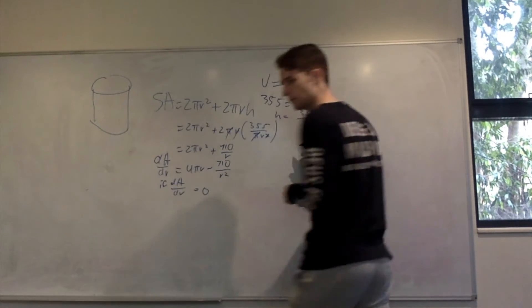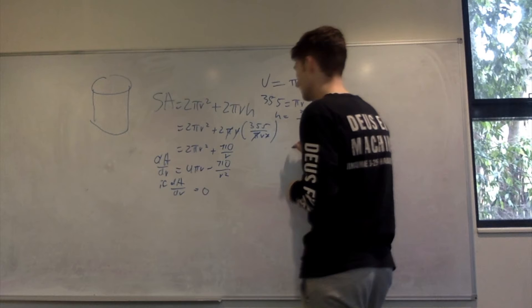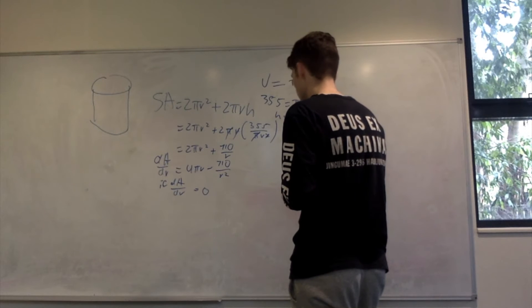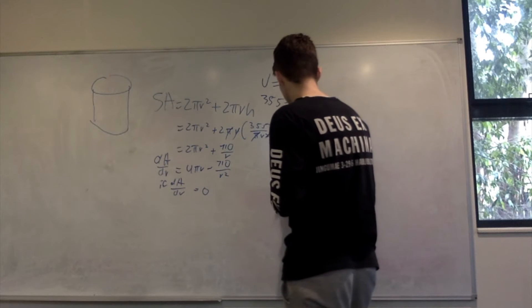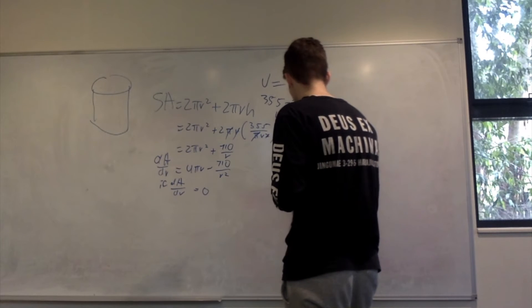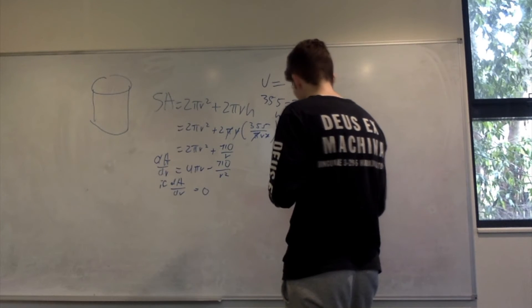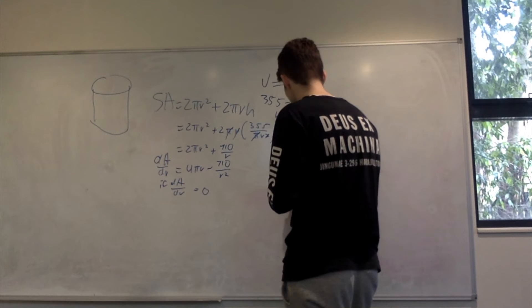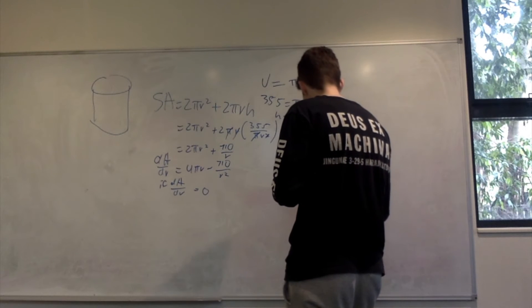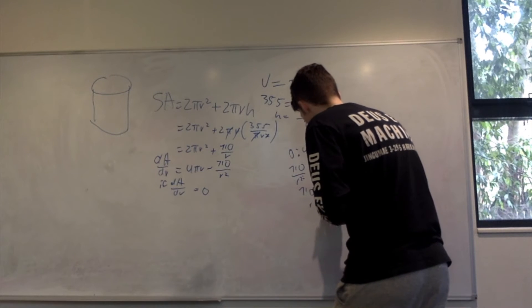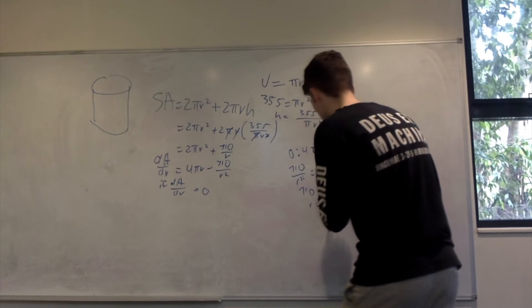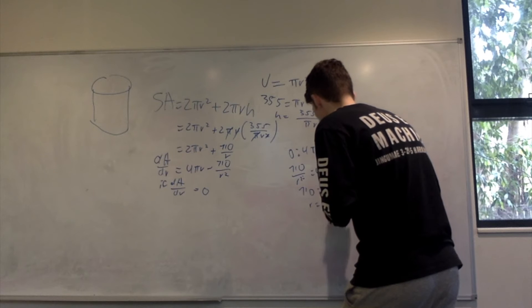If dS/dr = 0, then 0 = 4πr - 710/r². Solve for r. 710/r² = 4πr. Multiply r² across: 710 = 4πr³. r = ∛(710/4π).